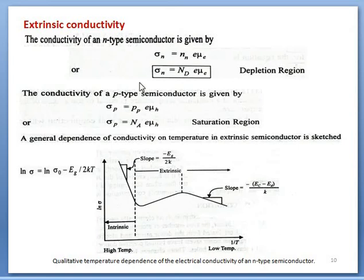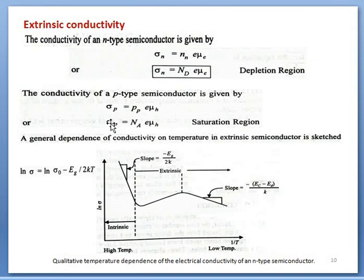Let's see the extrinsic conductivity. For N-type semiconductor, conductivity is expressed by a given equation. In the depleted region, Nn equals Nd, so Nn is replaced by Nd — a small n subscript represents N-type semiconductor. For P-type, conductivity is expressed by another equation, and in the saturated region, Pp equals Na, so it is replaced by Na. When we draw a plot between conductivity and reciprocal of temperature, at low temperatures concentration increases. The slope equation has log sigma, and at place of Eg, we have Ec minus Ed upon KT — not 2KT — during this region.